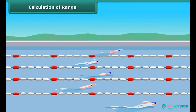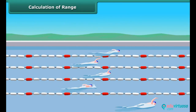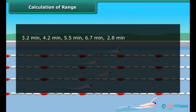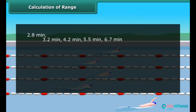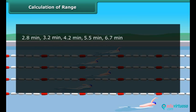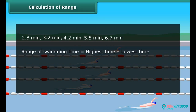Five participants completed their swimming race. Can we calculate the range of swimming time from this data? Yes, it's simple. First, order the data from least to greatest. Now, subtract the least value of time from the highest. So, the range of swimming time is 3.9 minutes.